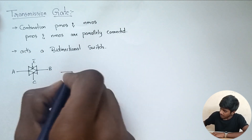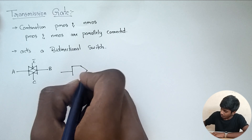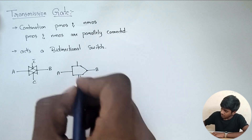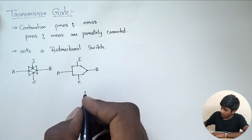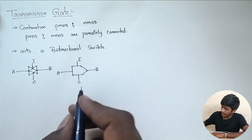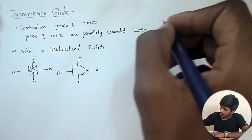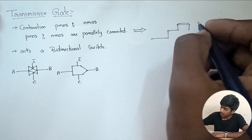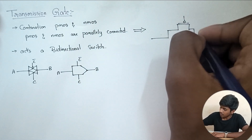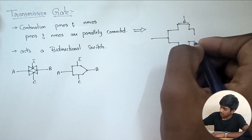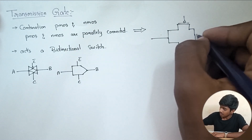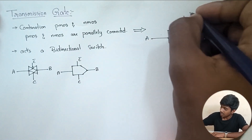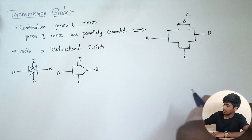We can also represent this transmission gate in another form, with output, input, and control signal C with C bar. Since it is a parallel connection, the transmission gate is represented with PMOS and NMOS in parallel, with PMOS having control signal C and C bar components.